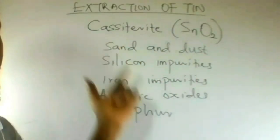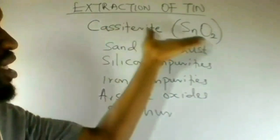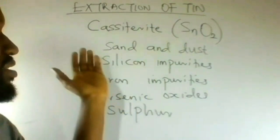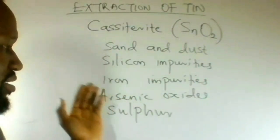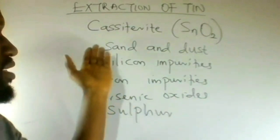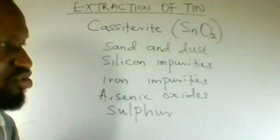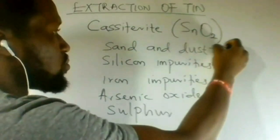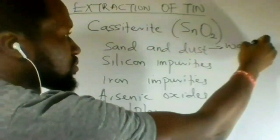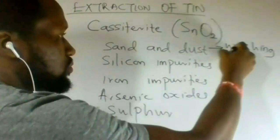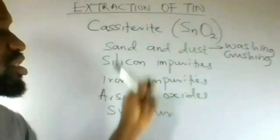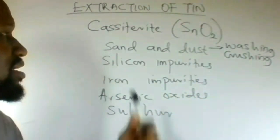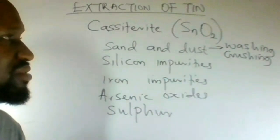The following impurities are always extracted together with cassiterite: sand and dust, silicon impurities, iron impurities, arsenic oxides, and sulfur. Sand and dust can be extracted by washing and crushing these substances to remove them from the mixture.